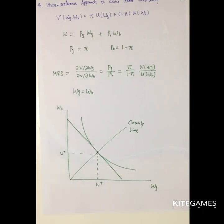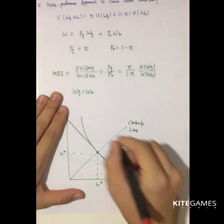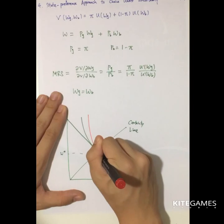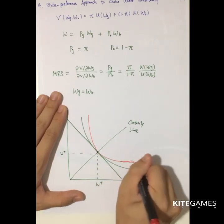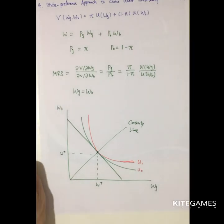So this model can use to investigate the insurance market. So say if you have another person. The utility is more curvature. So more curvature utility means is more risk averse. Then you can see that,